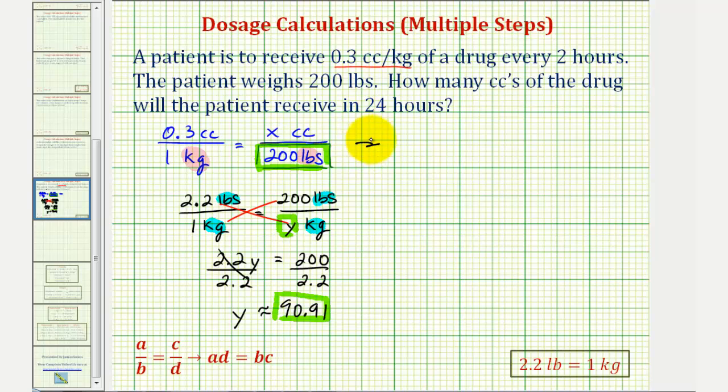So now we have 0.3 cc's to 1 kilogram equals x cc's to 90.91 kilograms. And now in this form, notice how we have the same units on top, same units on the bottom, now we can cross multiply and solve for x.